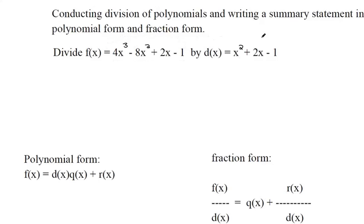We're asked to divide this function by this function and then state it in both polynomial and fraction form. So we can use long division. The divisor goes out here on the left side of the long division symbol and we're dividing 4x to the third minus 8x squared plus 2x minus 1.